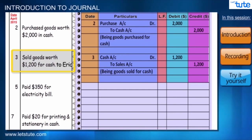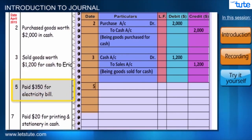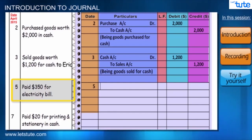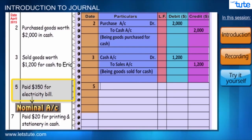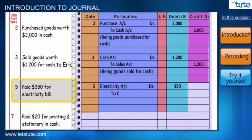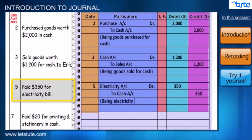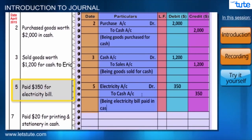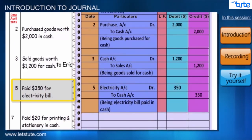The next transaction: a bill has been paid on the fifth. As it is an expense, it belongs to nominal account. Recording the journal entry as: electricity account debit 350 in the debit column, to cash account. The narration is: 'Being electricity bill paid in cash.'